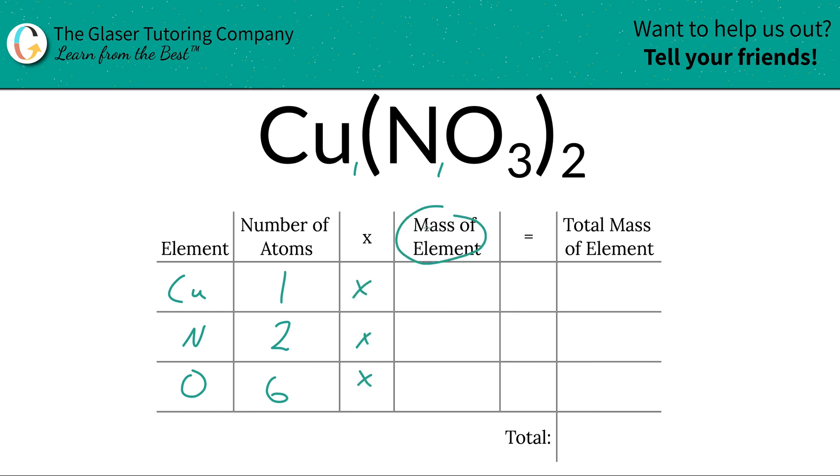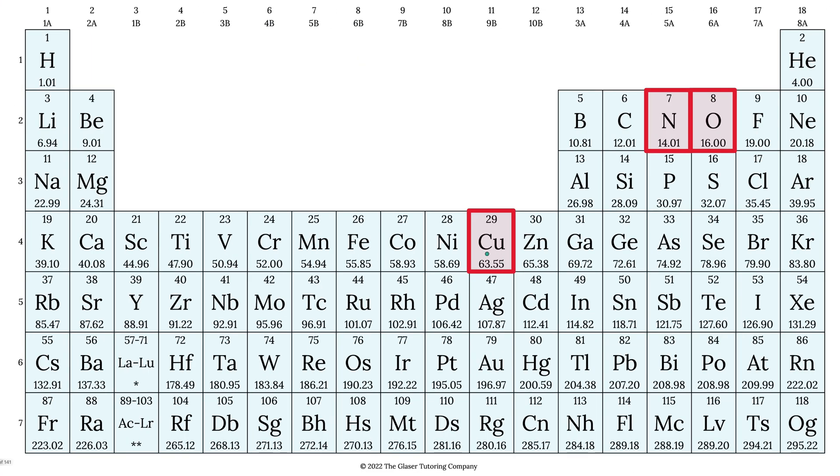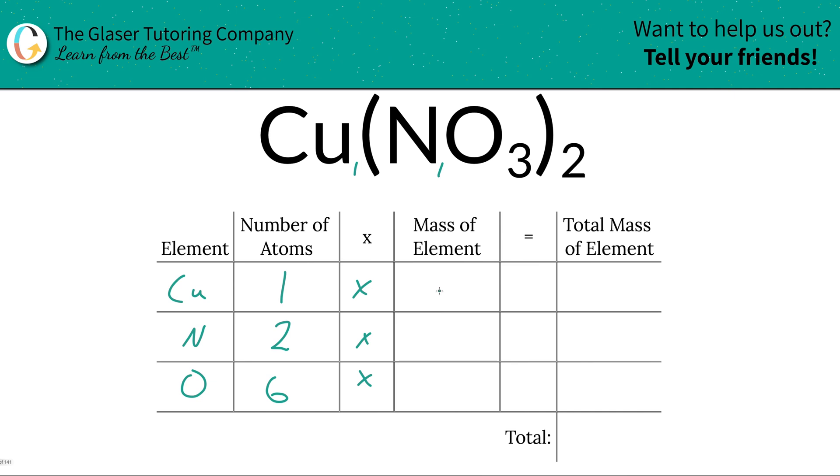Next is to identify the mass of each element, and that's where the periodic table comes into play. So copper here has a mass of 63.55, nitrogen is 14.01, and oxygen is 16. Those masses are in grams per mole or AMU. It actually does not matter. The magnitudes stay the same. The values do, they are different, but the magnitudes actually are equivalent. So it doesn't really matter which one we use here.